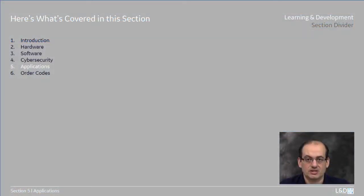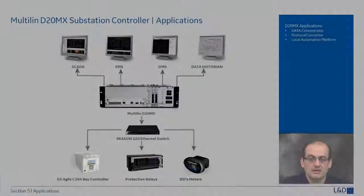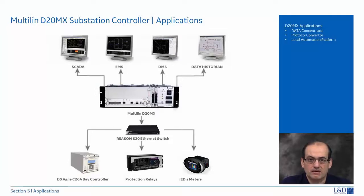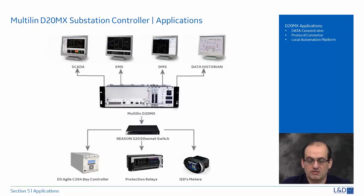In this section we'll discuss the applications of the D20MX in substation automation. One of the main applications is as a data concentrator, collecting, filtering, and reordering information before sending it to an EMS, DMS, or any SCADA master. It also has the ability to do protocol conversion — so while downstream devices may be talking Modbus, L&G, DNP, or other legacy protocols, and the SCADA master uses only one protocol like IEC 101 or DNP, the D20MX acts as a protocol converter between downstream and upstream.